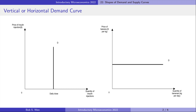Another extreme case is a horizontal demand curve. It implies that consumers are extremely sensitive to price changes. Consumers are willing to buy unlimited quantities of the good at market price. However, if the price rises even slightly, consumers stop buying the good altogether. A competitive firm faces a horizontal demand curve because there are many perfect substitutes for the good in the market.